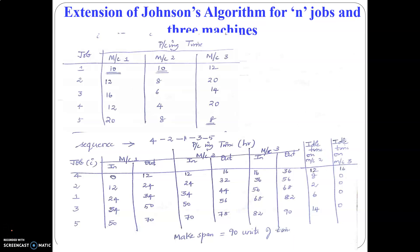Following the previous video, we have been doing the workshop scheduling using the extended Johnson's algorithm and we have determined the optimal sequence for minimizing the makespan time, that is 4, 2, 1, 3, 5. Now we are going to find out the timetable — that is the start and finish time of each job in each particular machine.